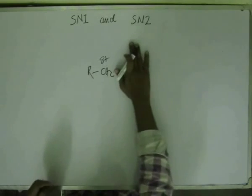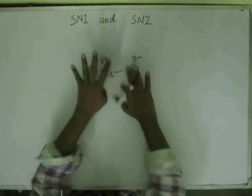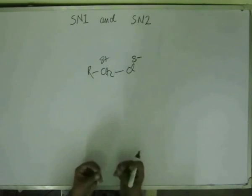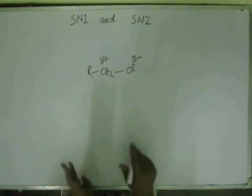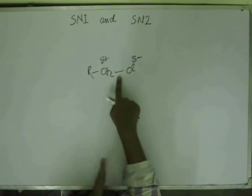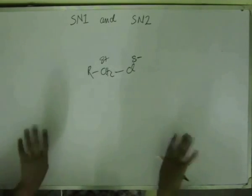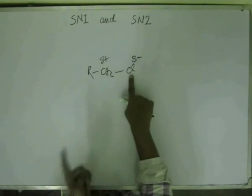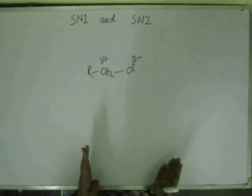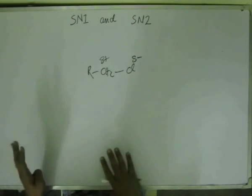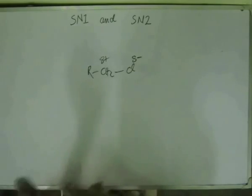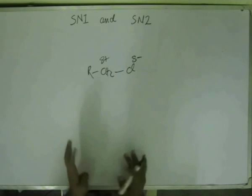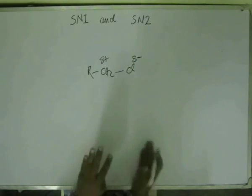The solvent will come in and start to solvate Cl and the C+. There will be a force of attraction between the solvent and the substrate, and some amount of energy will be released. That energy will be utilized to break this bond further. When electronegativity difference exists between atoms, the electrons will move out unilaterally to one side — that is called heterolytic fission, meaning electrons go all to one side and not equally on both sides.